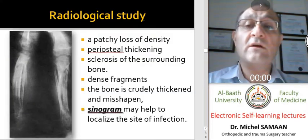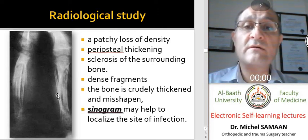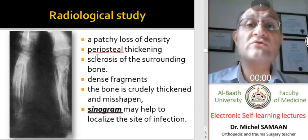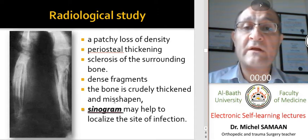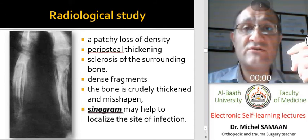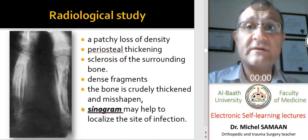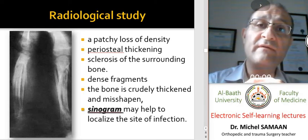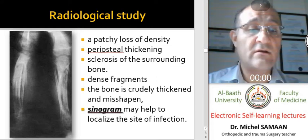On radiological study, we see obvious local osteoporosis in the region of infection, with patchy loss of density and heterogeneous osteoporotic thickening with sclerosis of the surrounding bone. A sinogram can also be performed — this involves injecting sterile radiopaque materials into the sinus opening and taking radiographs to identify the pathway of the sinus and its connection to the area of bone infection.